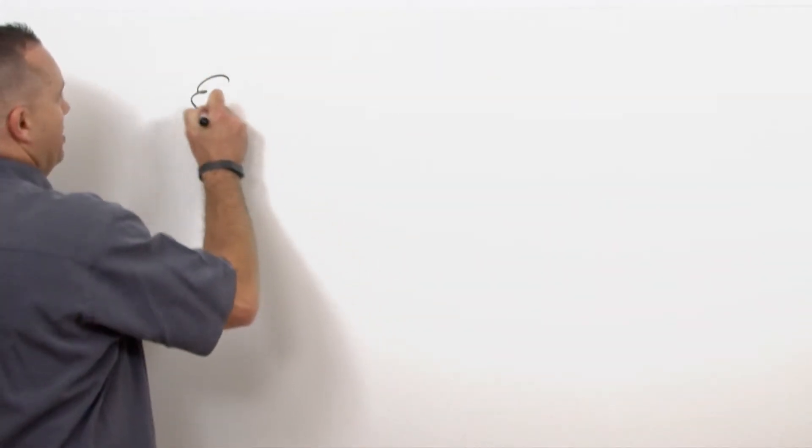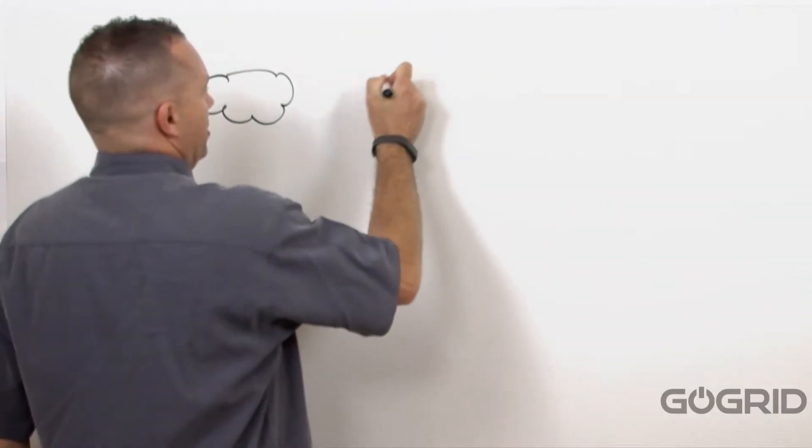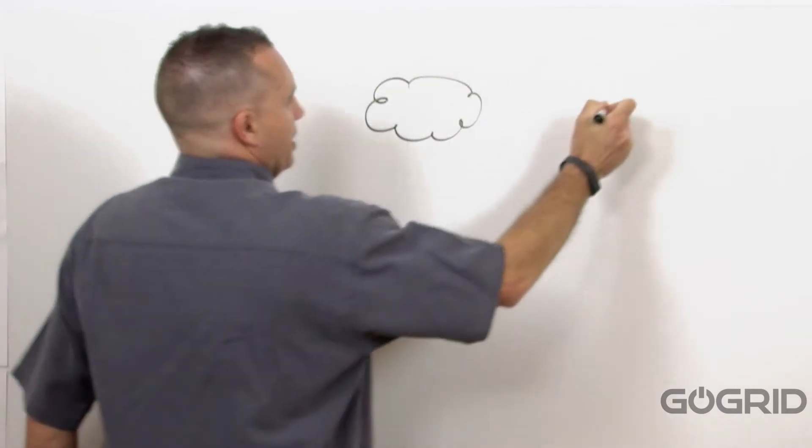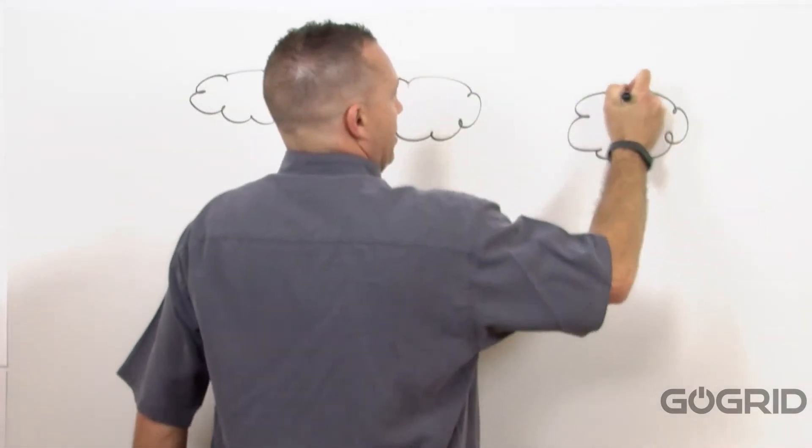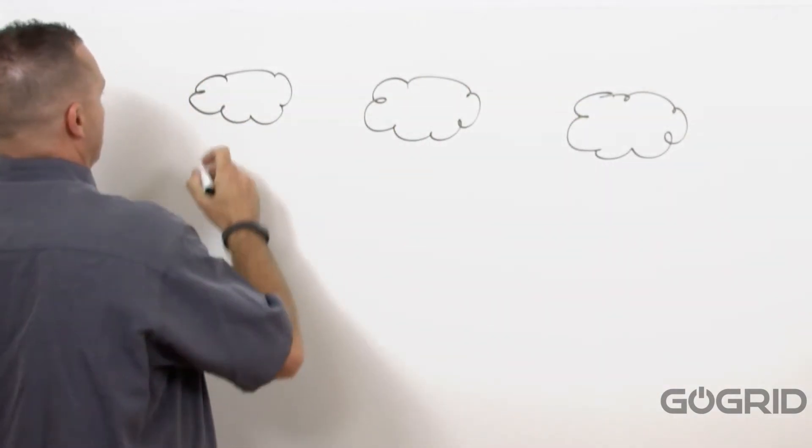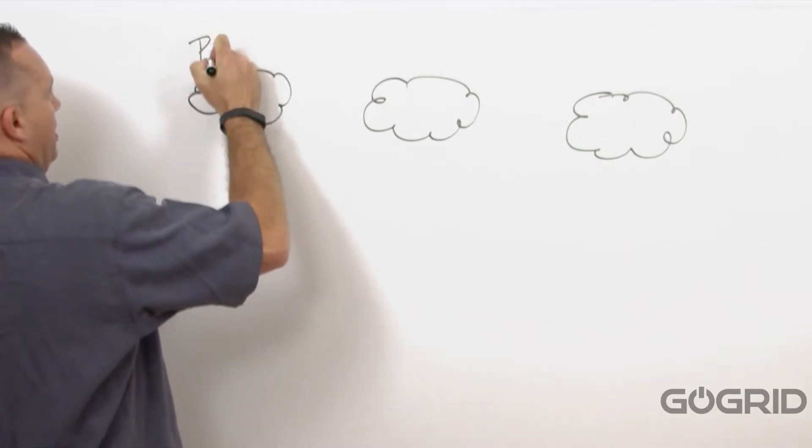Let's start out very simply by drawing a few clouds on the board here, and I'll explain what each of these are. This is a very high-level overview, so let's start with public cloud.